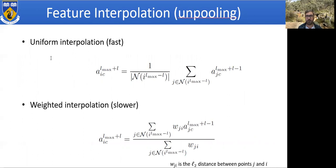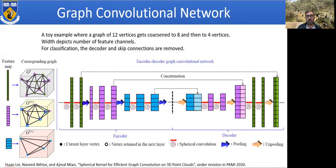Here is a more detailed structure of our graph convolution. As a toy example to show graph coarsening: a graph of 12 vertices gets coarsened to eight, then four vertices. For classification, the decoder and skip connections are removed. For semantic segmentation, we have exactly the same number of outputs as input points to assign a label to each input point, using a U-Net-like architecture with skip connections from the encoder to the decoder stage.